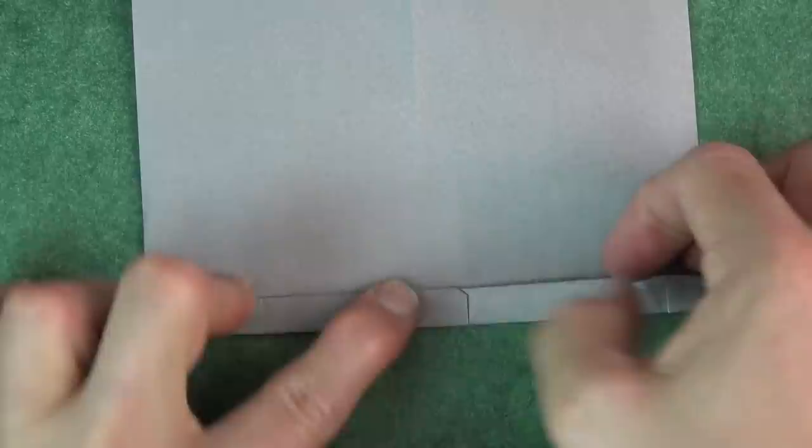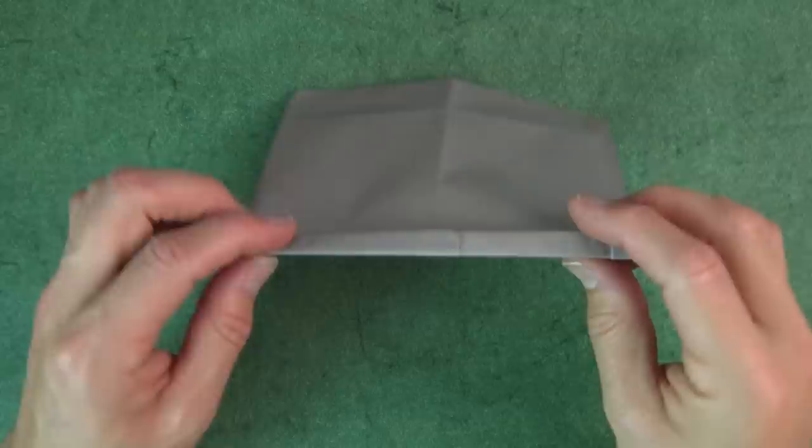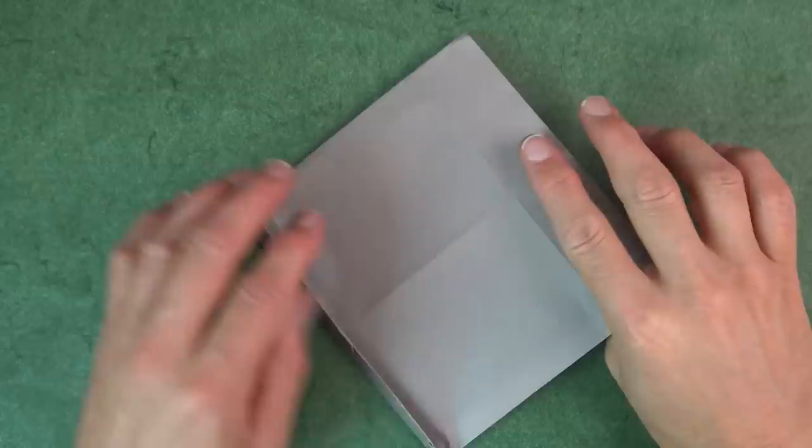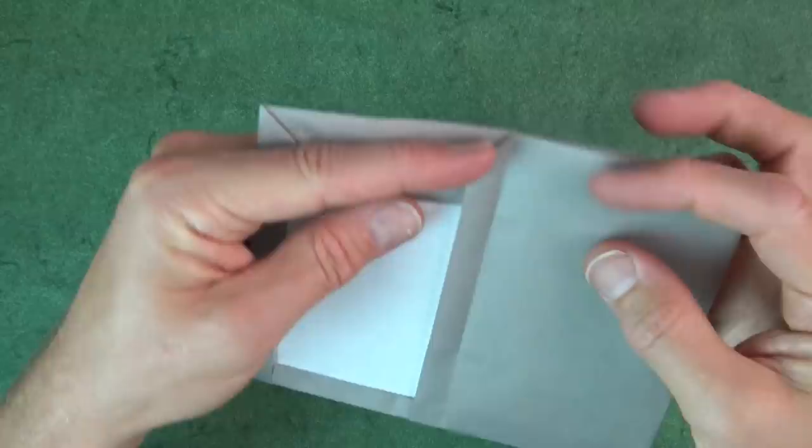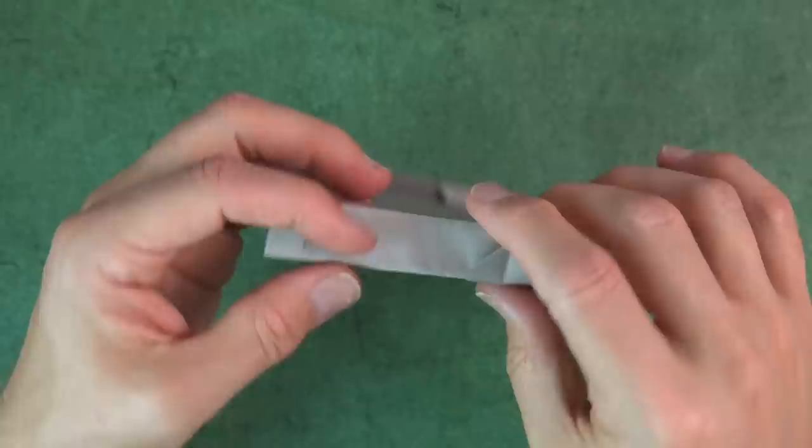Okay. So I'm going to turn it over so you see what it looks like. And now we're going to repeat all of that on this side. So you can fold it over, eyeball it, make it equal border. But when you do, you want there to be separation right there.